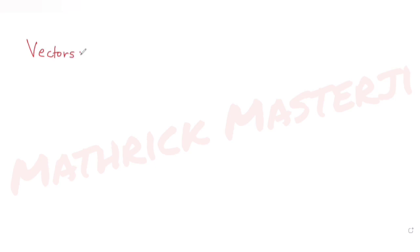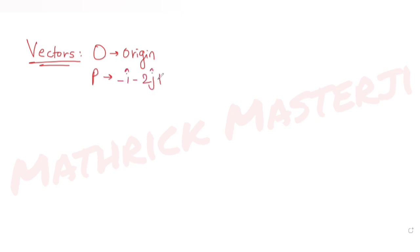Hi guys, I hope you are all doing well. Let's see today's question. Today's question is taken from the topic of vectors. The question tells us: let O be the origin and P has its position vector which is minus i minus 2j plus 3k.